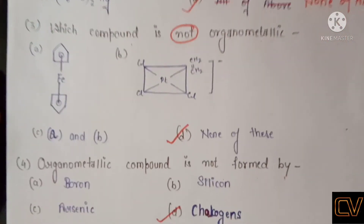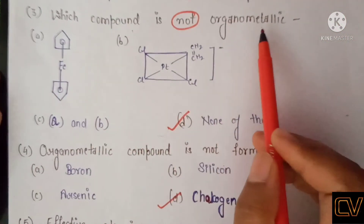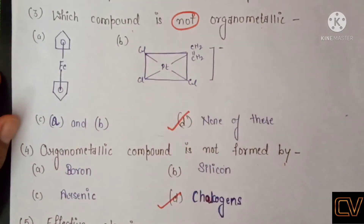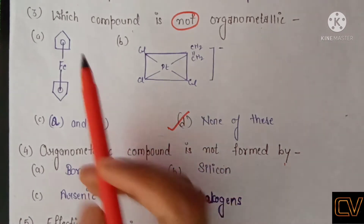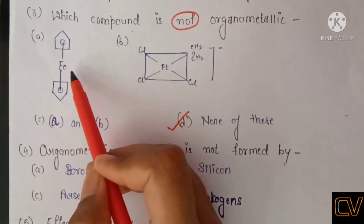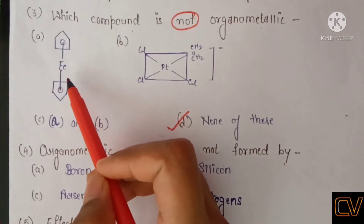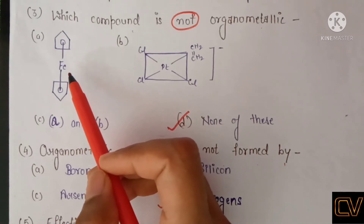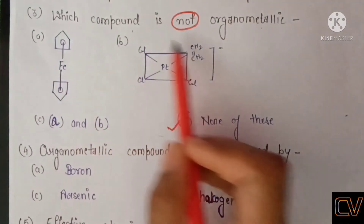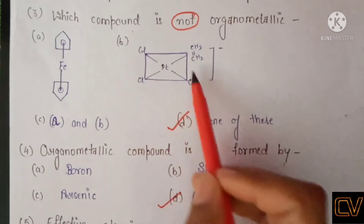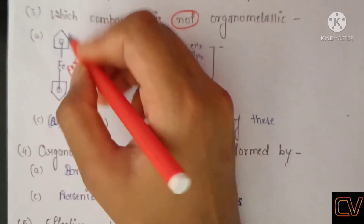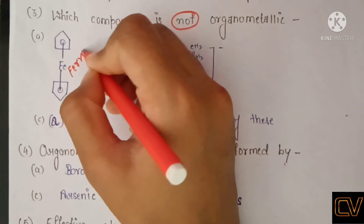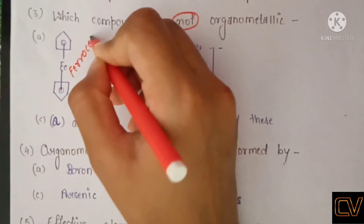Moving towards the third question: which compound is NOT organometallic? Again you are asked which compound from the options is not organometallic. The structure visible in option A is that of ferrocene — we will study this in detail in further lectures. Option B also shows ferrocene.